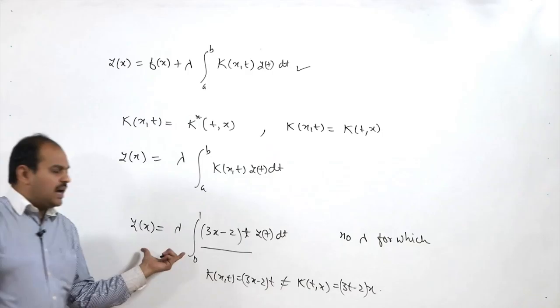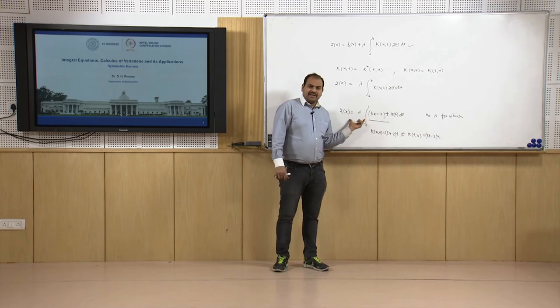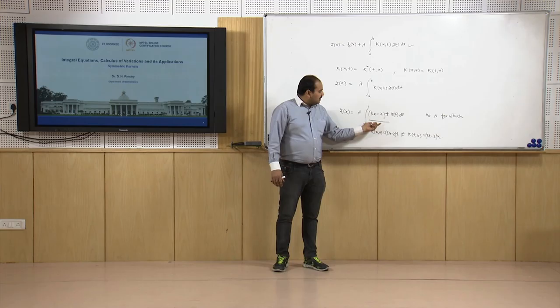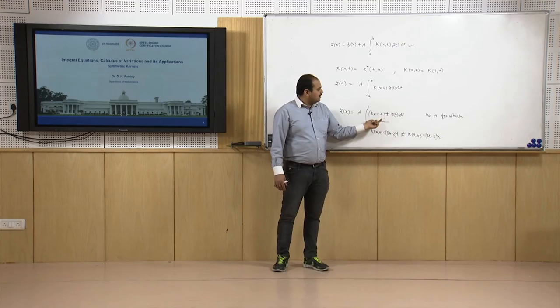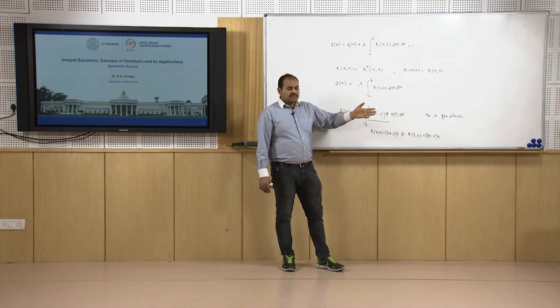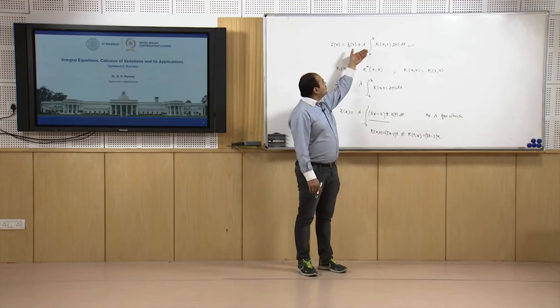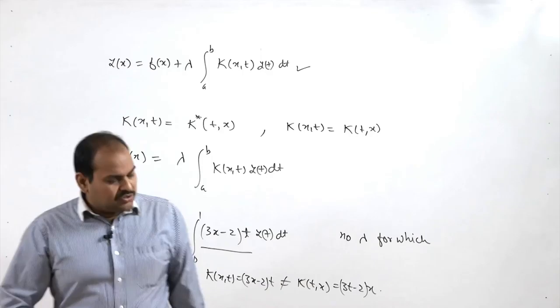This means there are kernels available such that we have no eigenvalues and hence no eigenfunctions. But this does not happen when we take a symmetric kernel. For a symmetric kernel, you can always find a constant λ for which we have at least one non-trivial solution — you can always find at least one eigenvalue. That is why symmetric kernels are a very important topic.